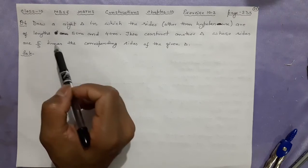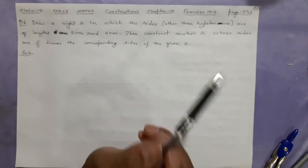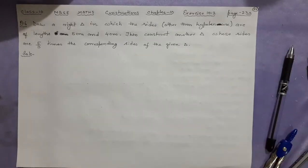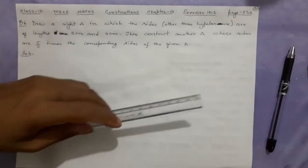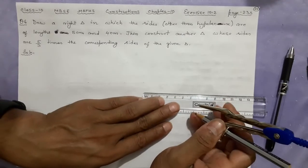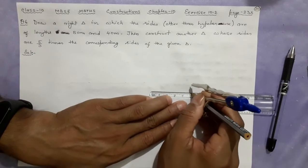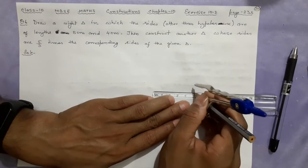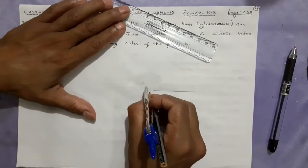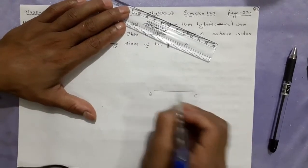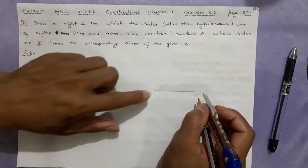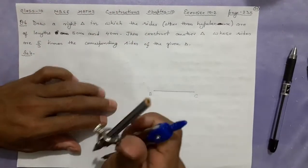Let's start. I'll choose one side of the triangle as 5 centimeter — this is not difficult at all. Draw 5 centimeter and name it BC. Now make 90 degrees here and cut it 4 centimeter.